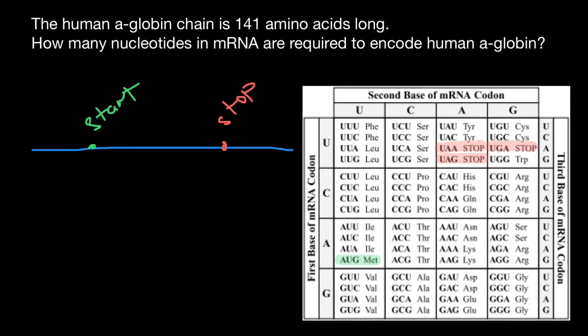This region here is going to be the 5 prime untranslated region (5' UTR), to which the ribosome would bind. This region also has regulatory functions, but it's not going to be translated.